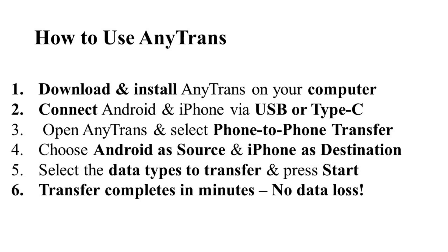To use AnyTrans, download and install it on your computer, then use a USB or Type-C cable to connect both your Android and iPhone to the computer. Launch AnyTrans, go to the Phone Transfer tab, and select Phone to Phone mode. Set Android as the source and iPhone as the destination, choose the data types you want to transfer, adjust any settings as needed, and click Start Transfer.